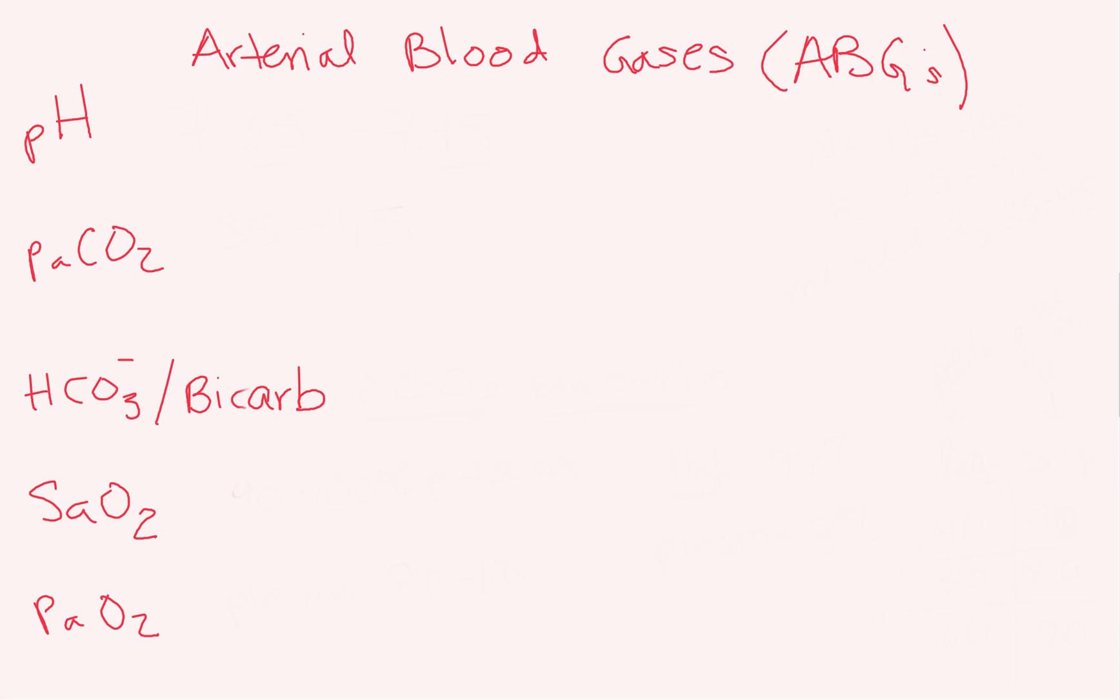The first value you look at in an ABG is your pH. Normal pH is 7.35 to 7.45. That's really helpful because a lot of labs have this 35 to 45 in them, so it makes it easier for us to remember. 7.35 to 7.45 is a normal pH.